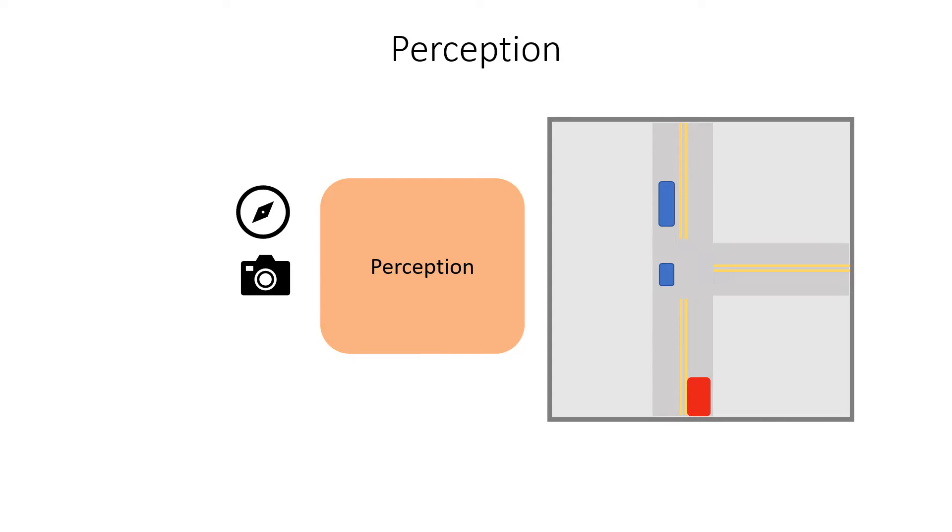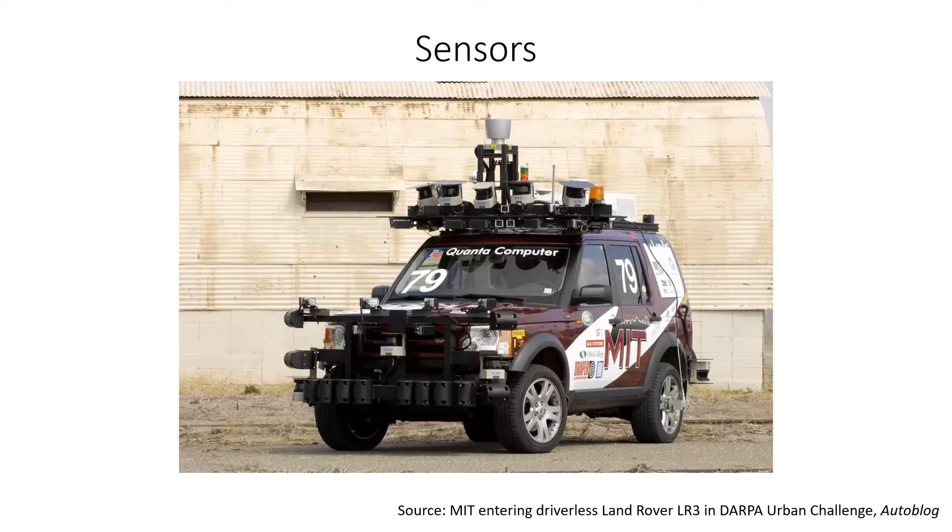And while we humans can do this just by looking, autonomous vehicles today use a variety of different sensors to see the world. So here's what a self-driving car looked like back in 2007. The cars today look a little bit sleeker, but under the hood are using just about the same sensor suite.